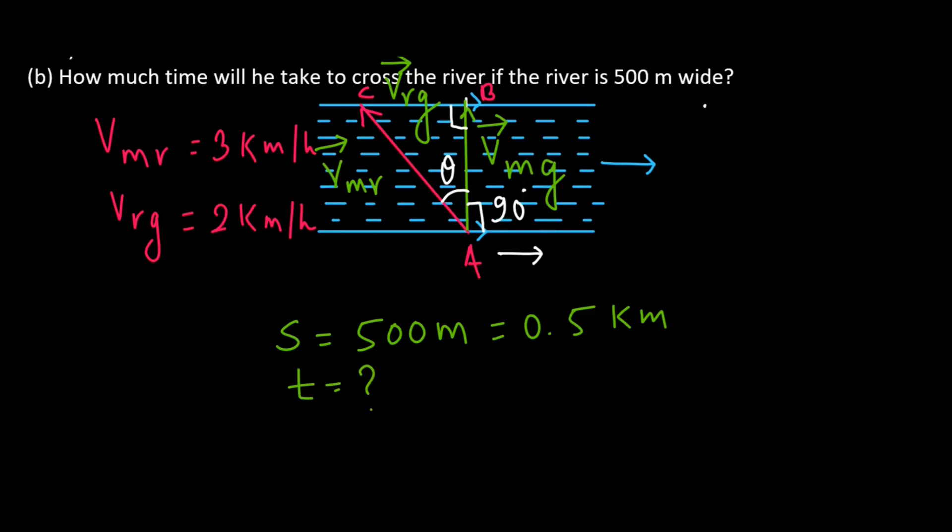We have the velocity of man with respect to the ground. We will use the Pythagorean theorem. From the Pythagorean theorem, we see that V_mg squared equals V_mr squared plus V_rg squared.